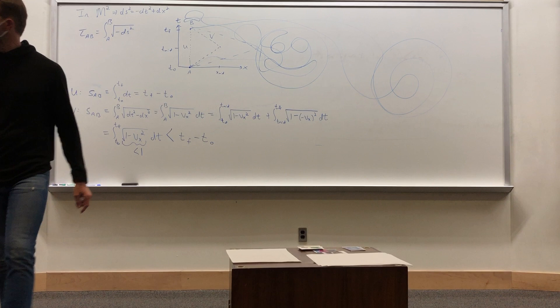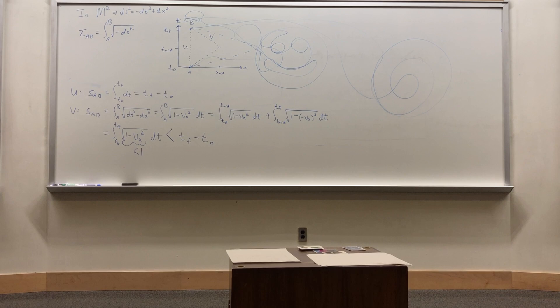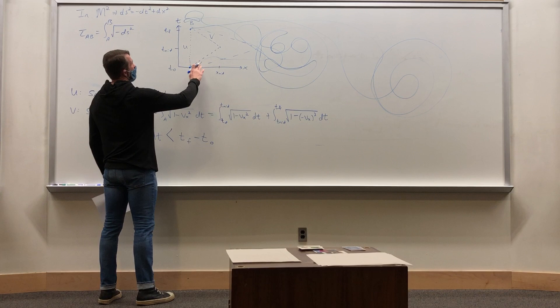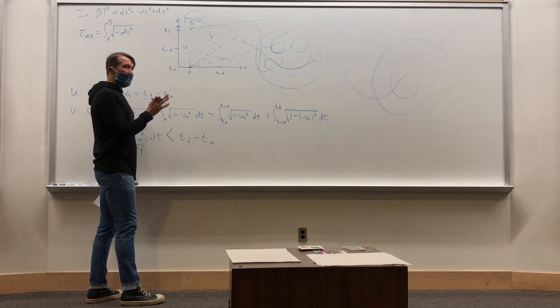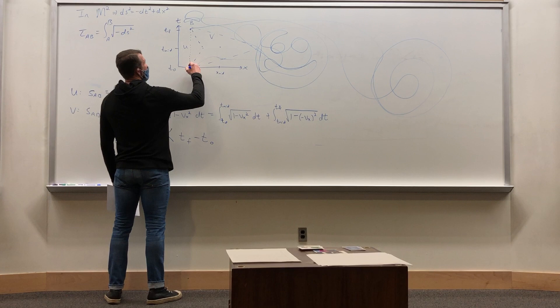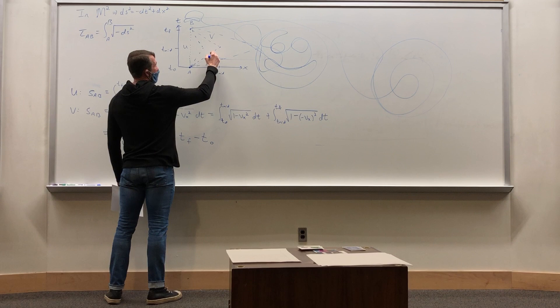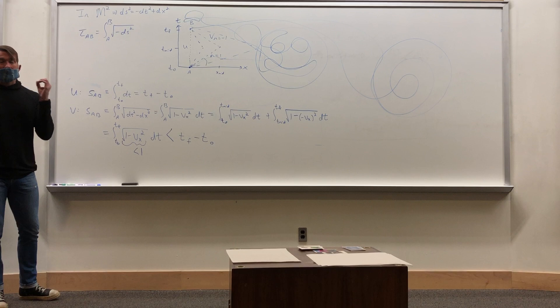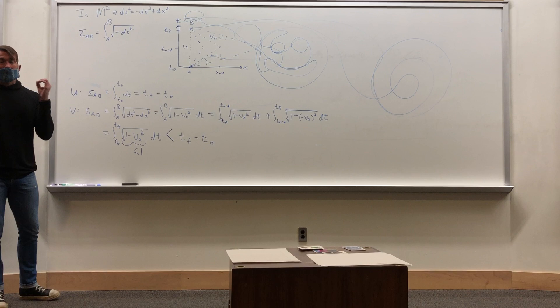If the path goes out with slope of one and comes back with slope of minus one, then you're traveling at the speed of light, and ds squared for light is zero — so the path length is zero.